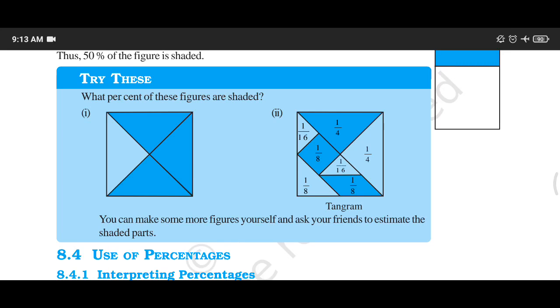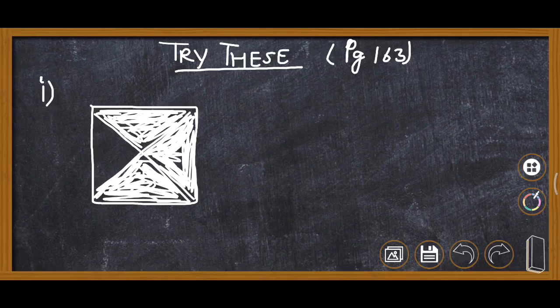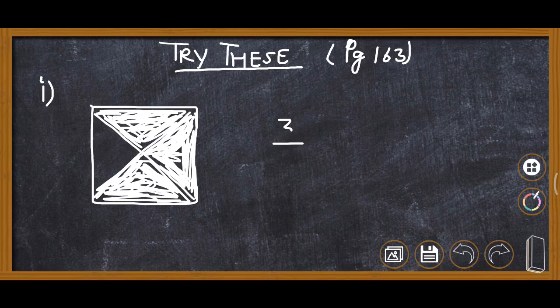Let's solve it. This is the first figure. Here you can see the total parts are four and the shaded parts are three. So the fraction will be 3 upon 4.